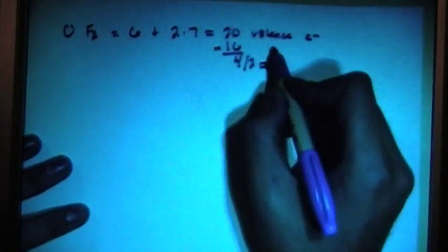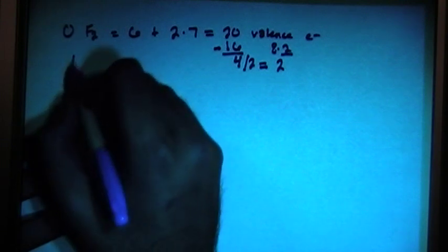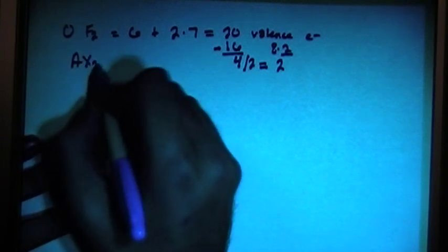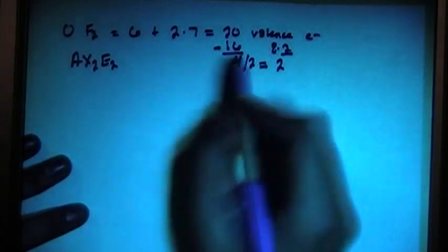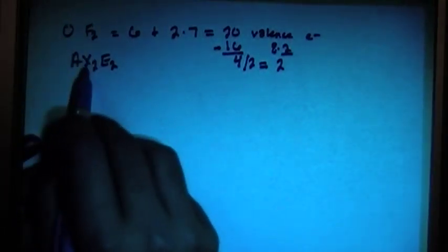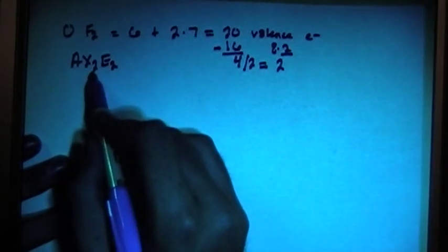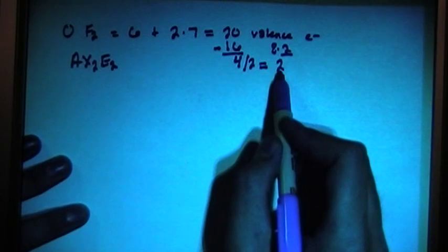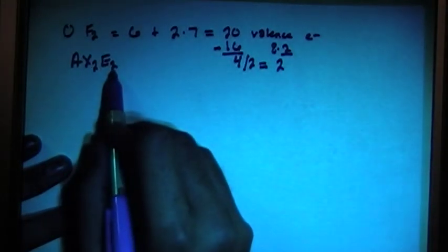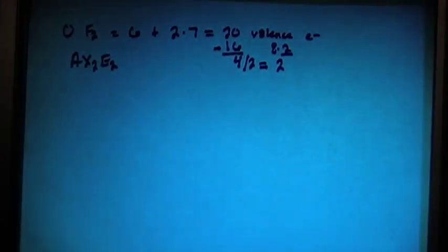This is 8 times 2. So the general shape of this molecule is going to be AX2E2, where X is the number of atoms connected to the central atom. So there's 2 fluorines, X2, and the number of lone pairs, this 2, is represented by the E2, which is the number of lone electron pairs on the central atom.